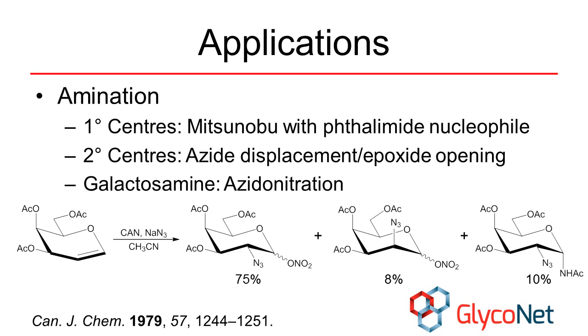When the galactal is exchanged for a glucal derivative, a 1 to 1 ratio of gluco- and manno-oriented derivatives is obtained. It should be noted that this reaction poses an explosion risk, and proper safety precautions should be put in place before attempting to carry it out.